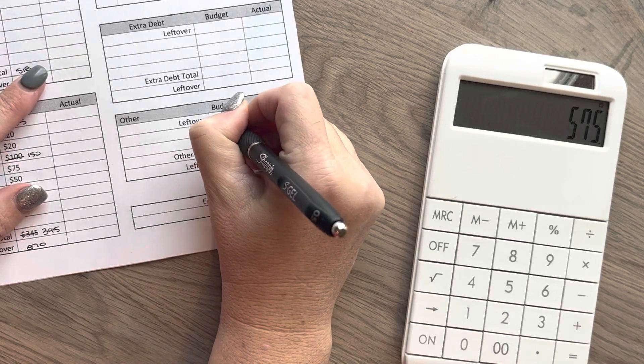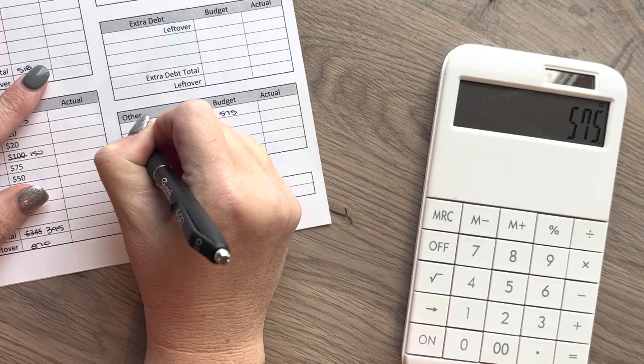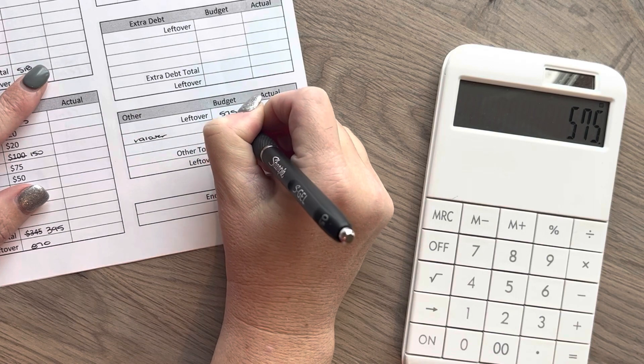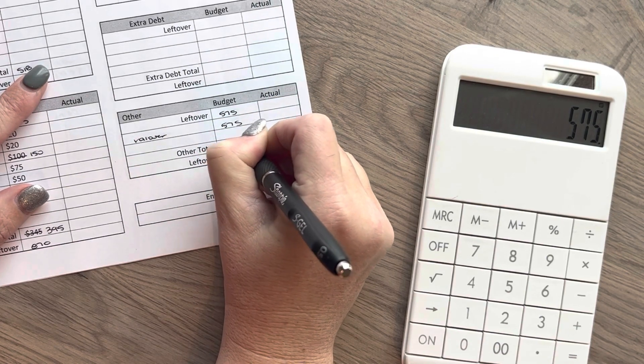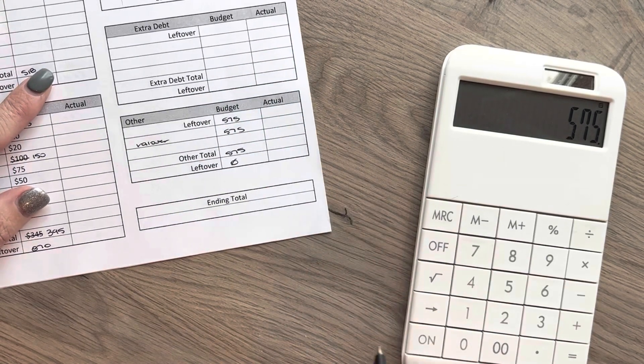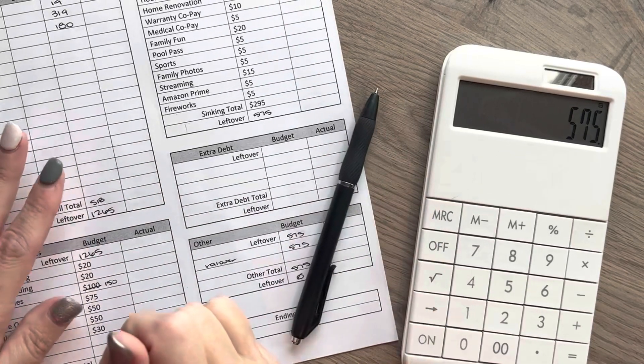Which then we move down here for rollover, which leaves us with that zero-based budget that we like. That is that.